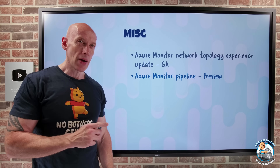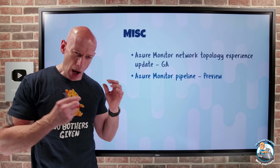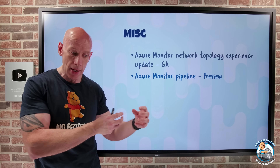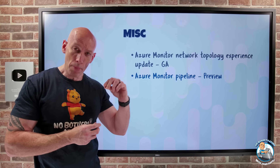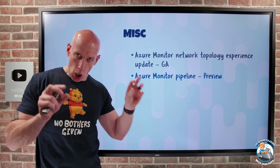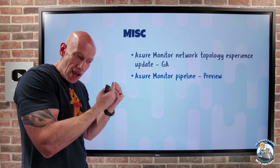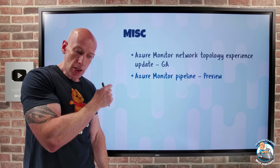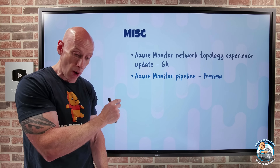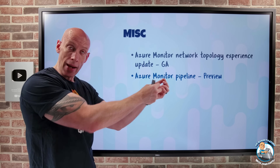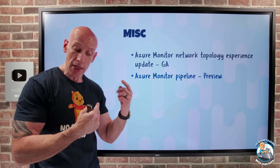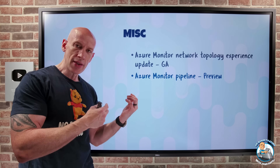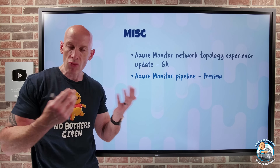Azure Monitor Pipelines is in preview. Think of this as enabling very high-volume ingestion from edge environments such as on-premises — it's like extract, transform, load, but for monitoring data. There are two components: an edge pipeline and a cloud pipeline. The edge pipeline runs at your edge, collects and caches data if required, then sends it to the cloud pipeline, where data may be transformed and ingested into Azure Monitor. This works with Arc-enabled Kubernetes, IoT resources, and other types of log sources.